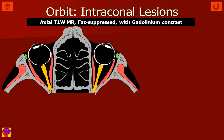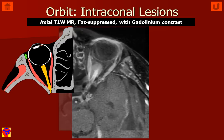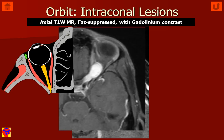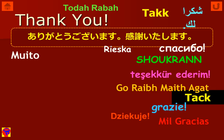In summary, when we look at intraconal lesions within the orbit: if the optic nerve is enhancing and not enlarged, it is an optic neuritis. If the optic nerve is enhancing and is enlarged, it is an optic nerve glioma. And if we see enhancement around the outside of the optic nerve, we must consider that the patient has an optic nerve sheath meningioma.